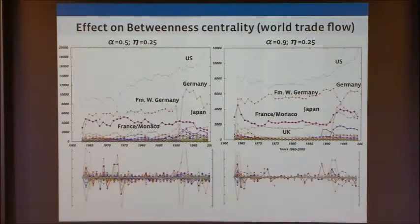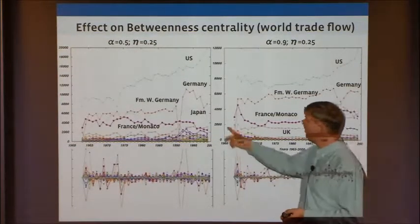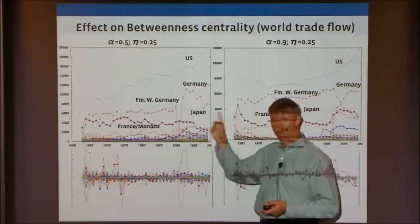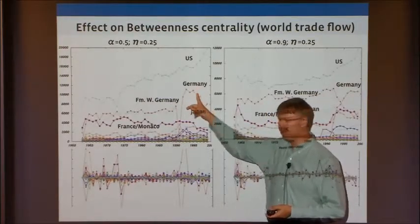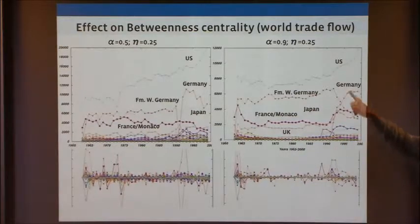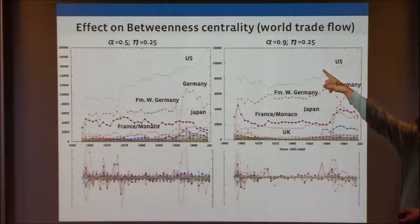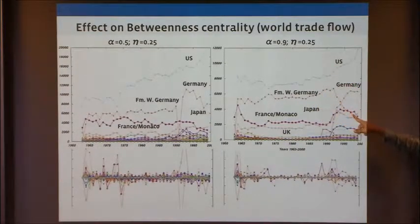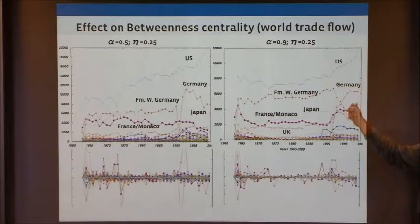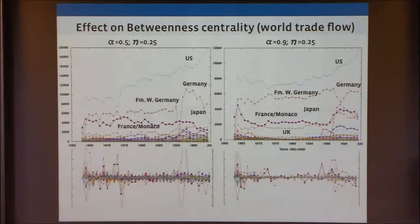Looking at centrality in the World Trade Flow, with a very low alpha, former West Germany basically disappears and Germany comes up when the Berlin Wall falls. With a slightly higher alpha, former West Germany hangs around for a while and the new Germany takes a long time to rise — giving an interesting phase shift. So you have the longevity of communities versus these phase shifts, and sometimes you actually need to explore multiple values of these attributes to get into that.